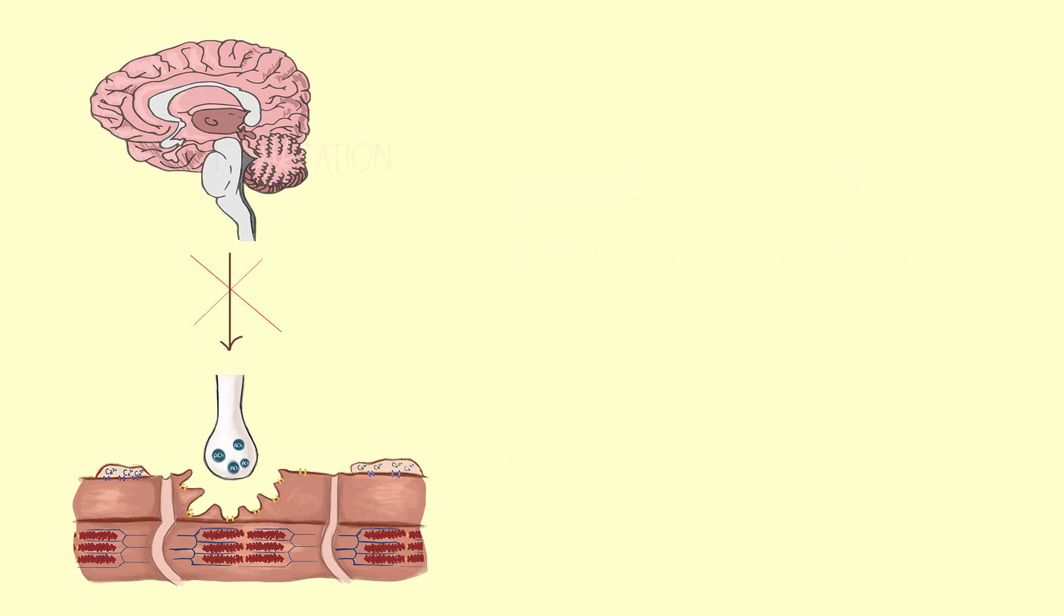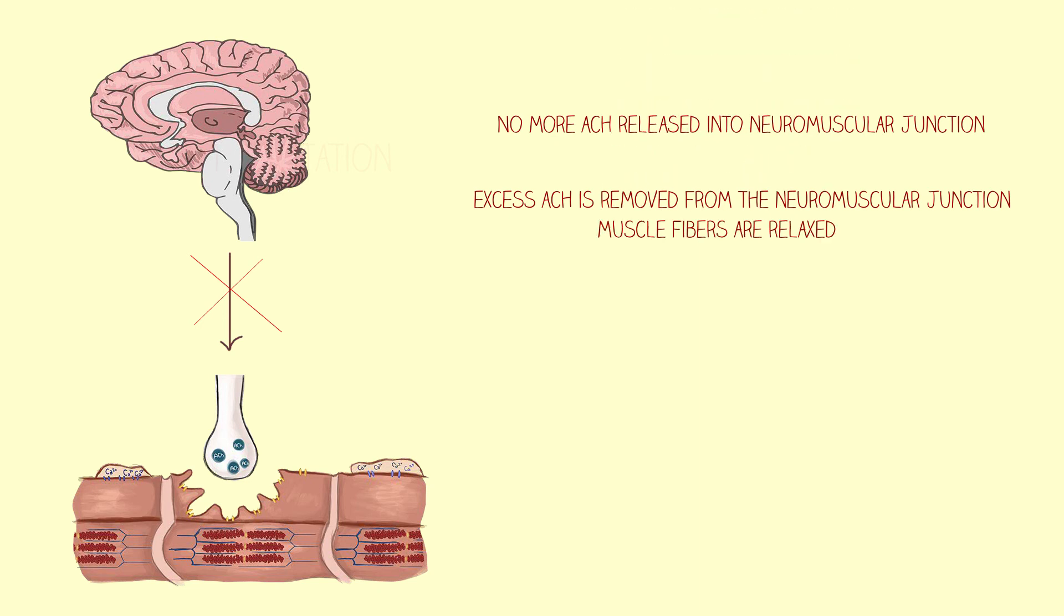Once the motor neuron action potentials cease, no more acetylcholine is released, excess acetylcholine is removed, and the muscle fibers are relaxed.